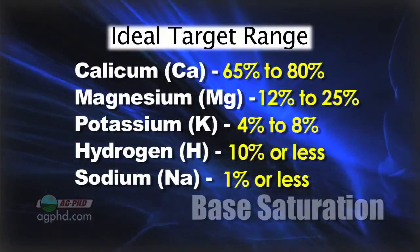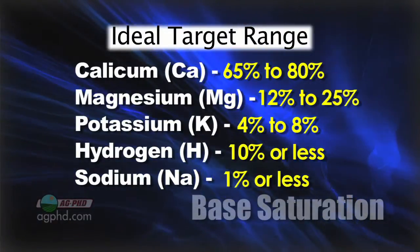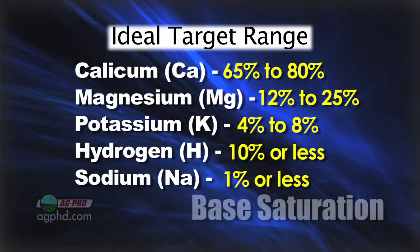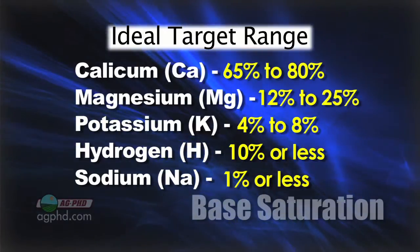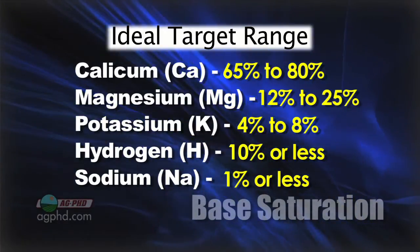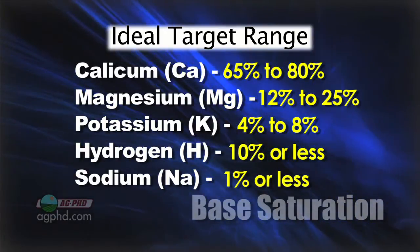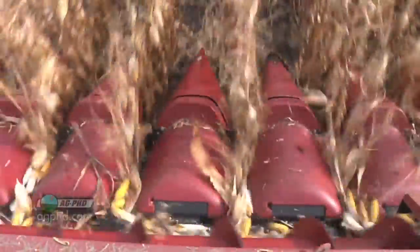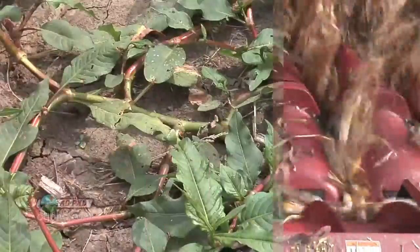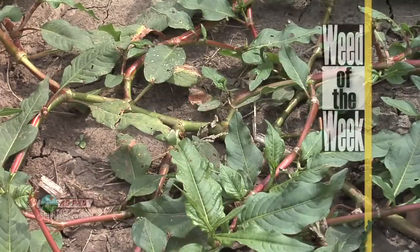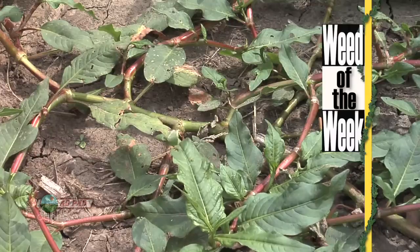Base saturation is a ratio of five different nutrients in your soil — calcium, magnesium, potassium, hydrogen, and sodium. It is super important on a soil test and one of the very first things we always look at. You want those percentages in the right ranges so you get maximum availability and maximum yield. And of course, you won't get maximum yield without perfect weed control — we'll show you how to stop our Weed of the Week coming up later in the show.